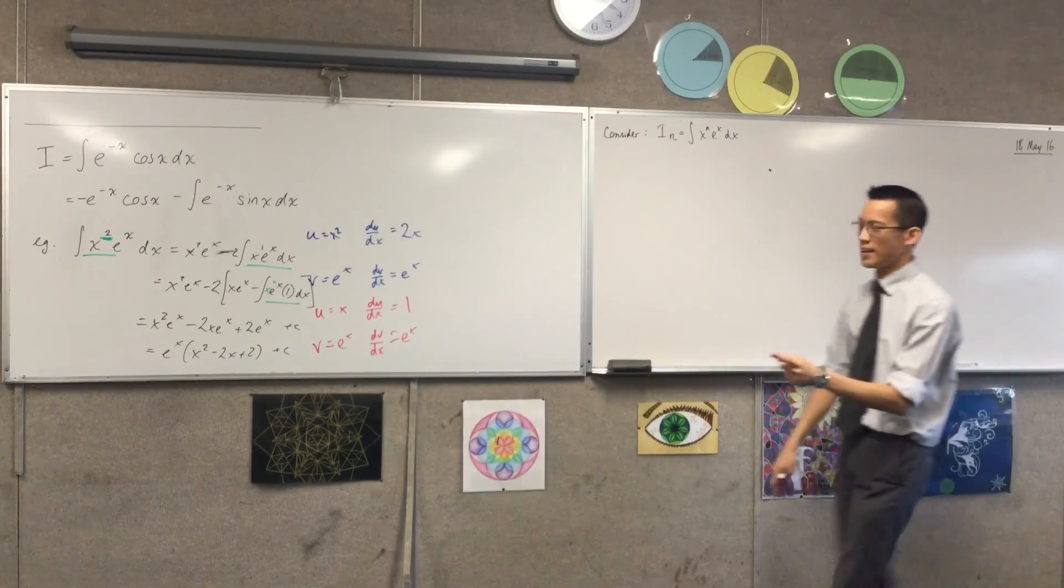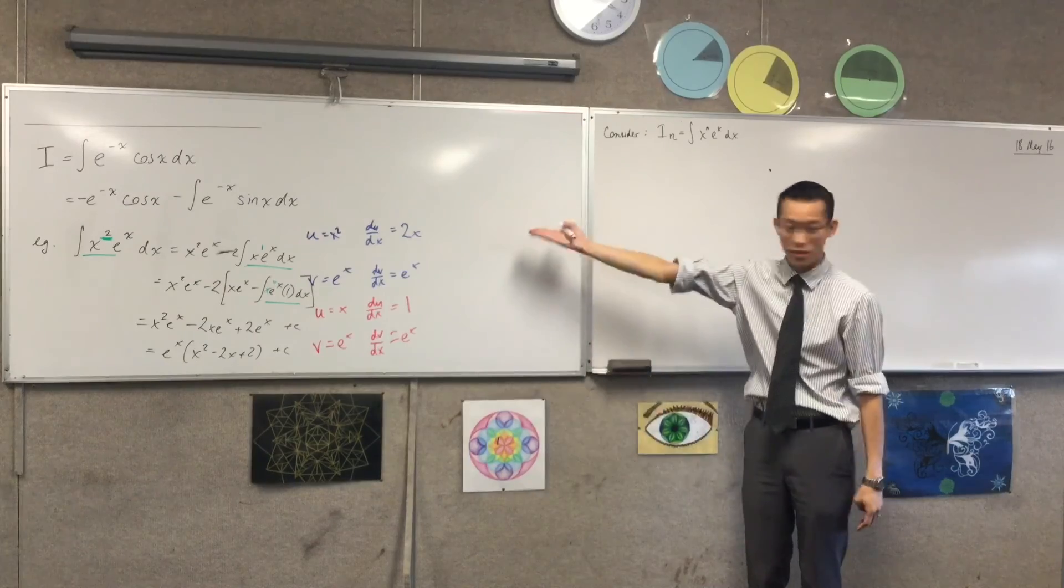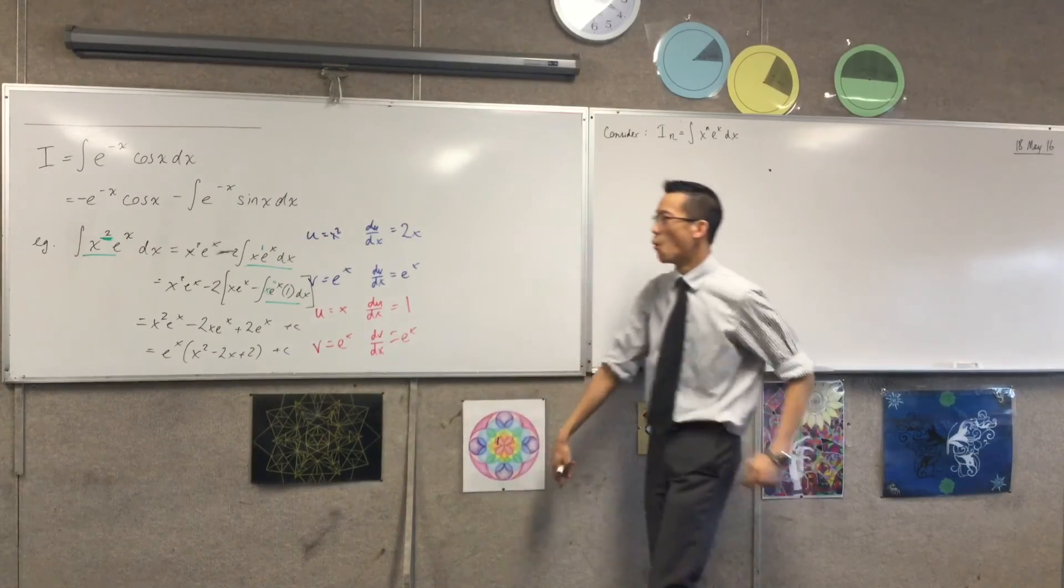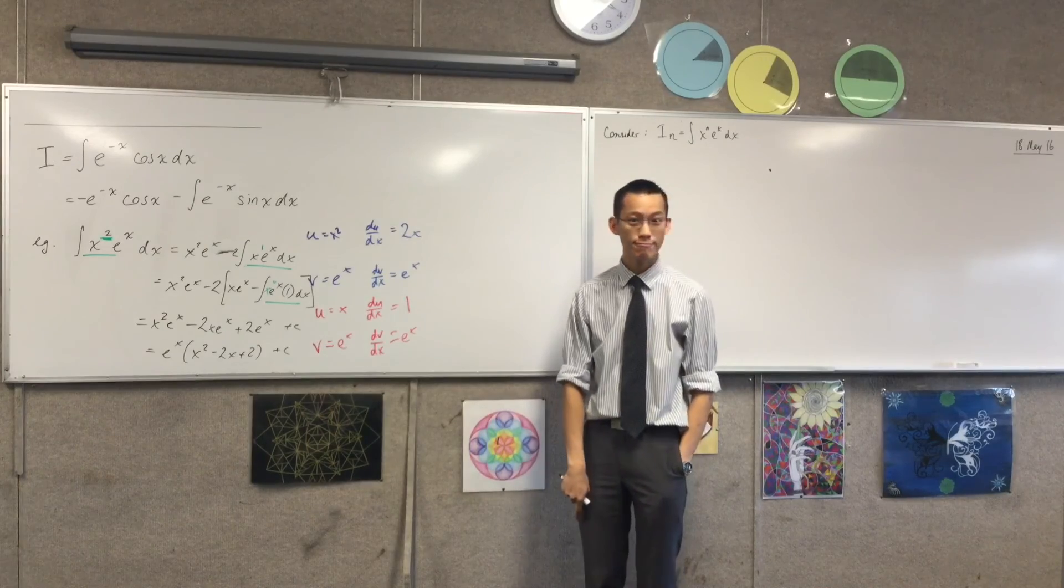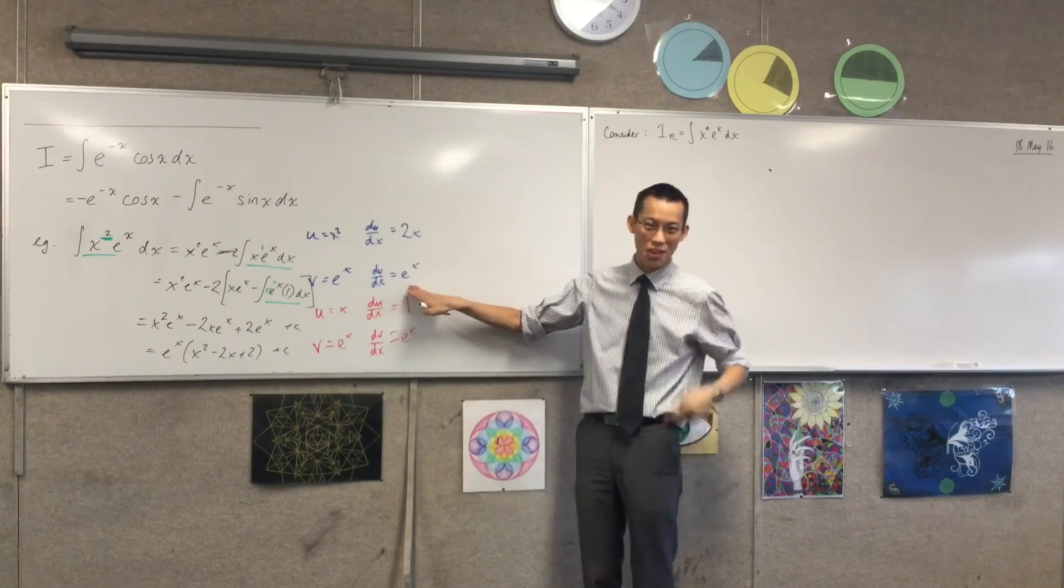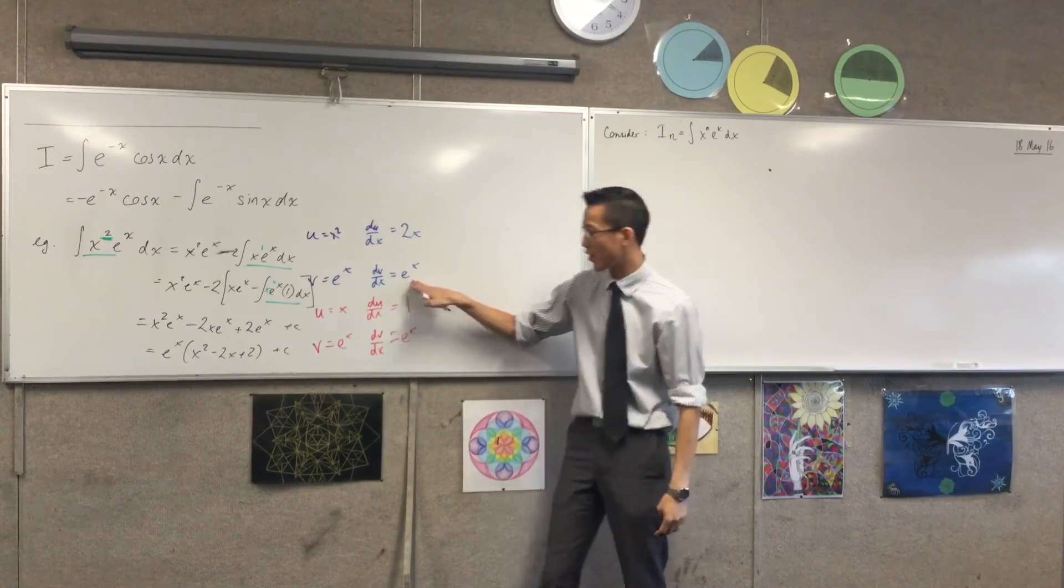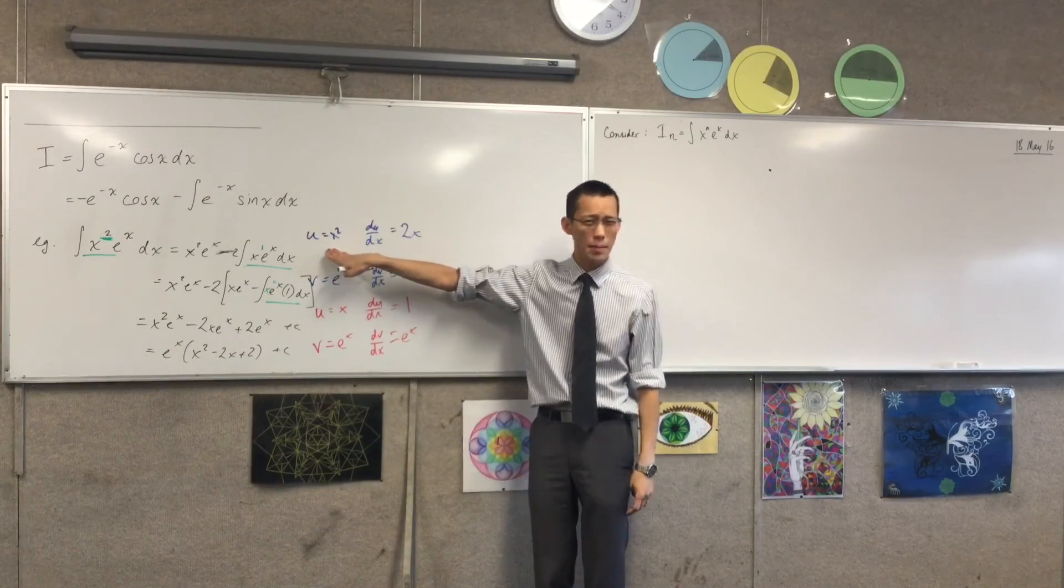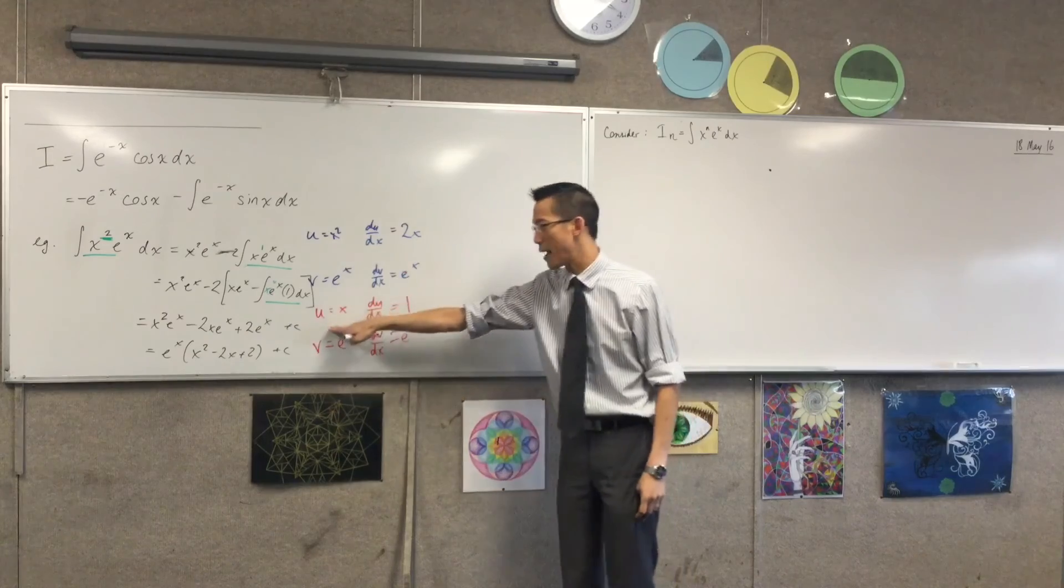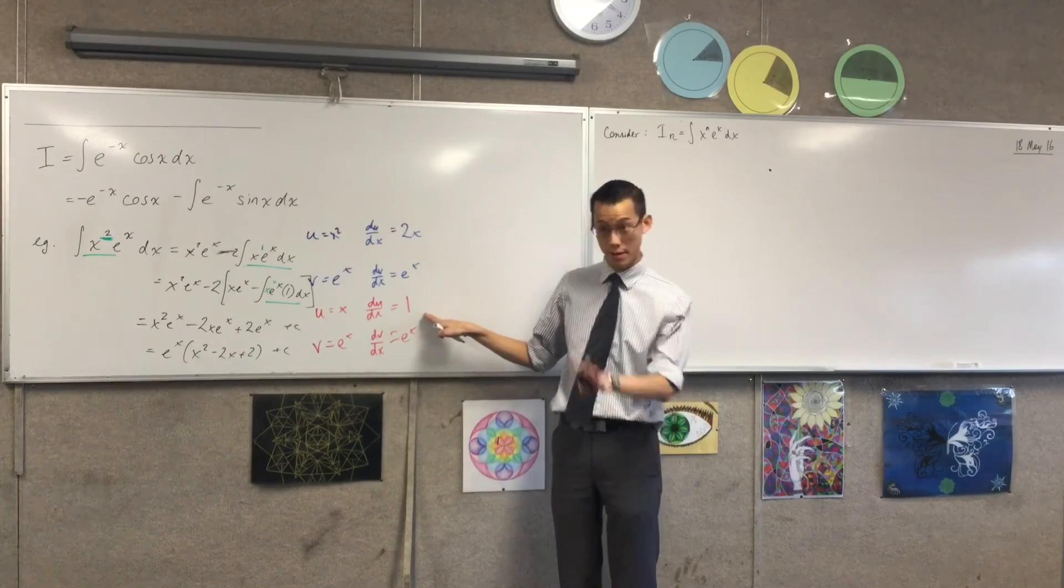Okay, so just like before, and maybe we can do this part in our heads because we've just seen it happen, what are we going to choose for u and dv/dx? You're so commonly going to put your exponential here because it ends up with something just like you had before, and you want to put your polynomial term up here because it gets progressively better each time you go through integration by parts.